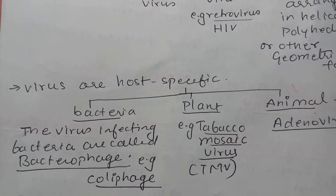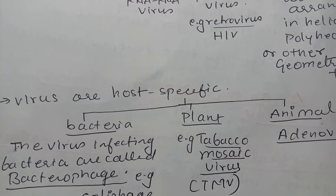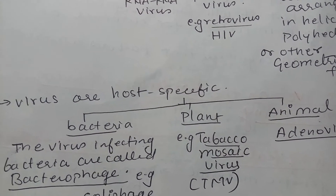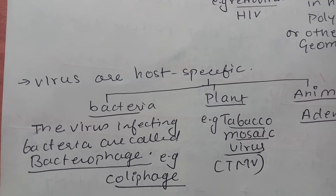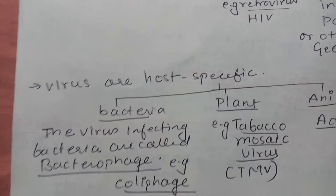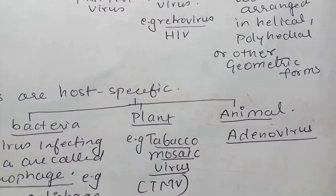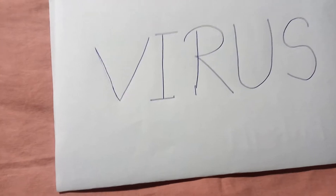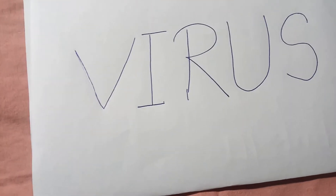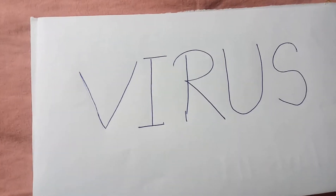Viruses are host specific. A virus which infects bacteria may not infect plants and animals — they are highly specific. The viruses which infect bacteria are called bacteriophages; for example, coliphage, which infects E. coli. Similarly, an example of a plant virus is tobacco mosaic virus, and an animal virus such as adenovirus. There are many viruses, and we will study them and their significance throughout the syllabus.